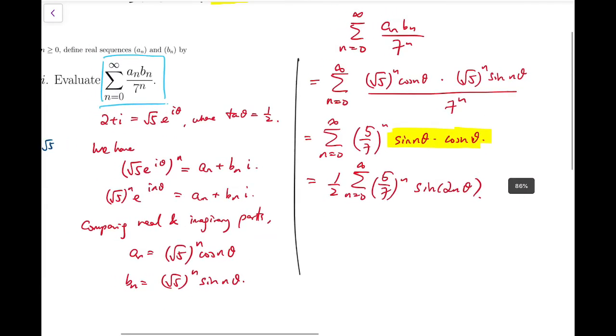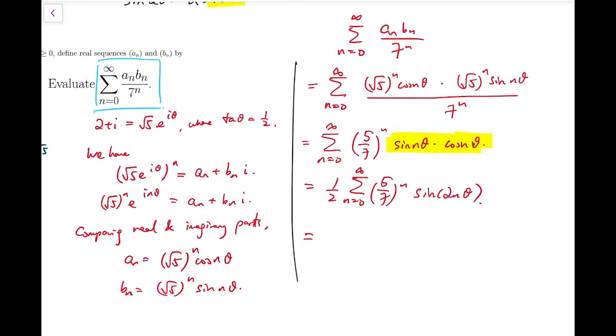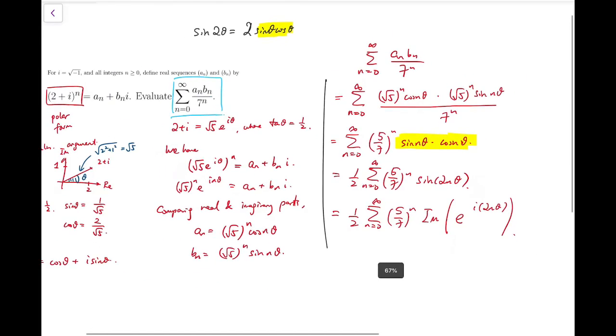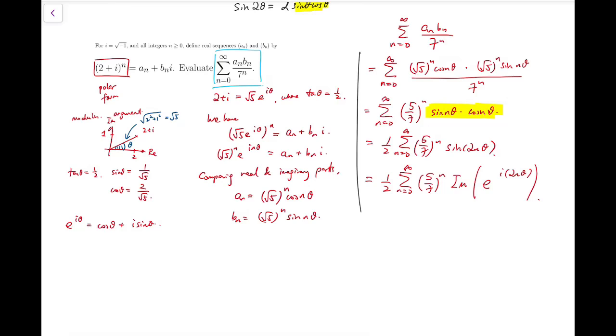At this stage, we can use the polar form again and rewrite the sine term as the imaginary part of e^(i·2nθ). From the definition e^(iθ) = cos + i·sin, sine of 2nθ is exactly the imaginary part of e^(i·2nθ).